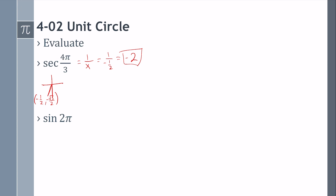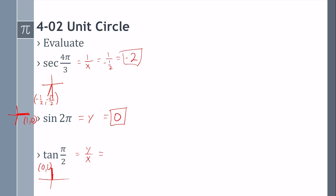Sine of 2 pi — 2 pi is over here, and that point is (1, 0). Sine is y, so the y-coordinate is 0. Tangent of pi over 2 — pi over 2 is here, and that coordinate is (0, 1). Tangent is y over x, so that would be 1 over 0. You cannot divide by 0, so that is undefined.